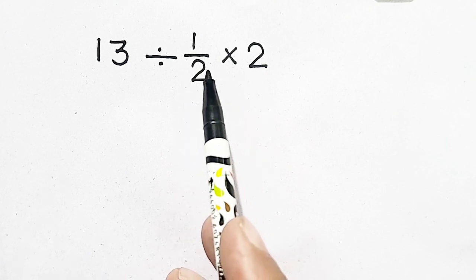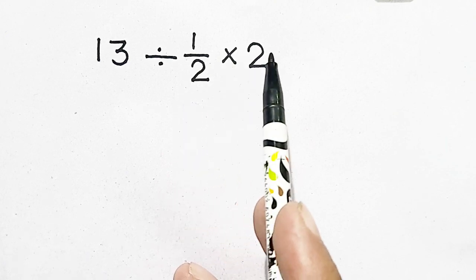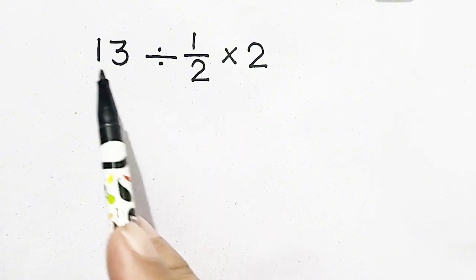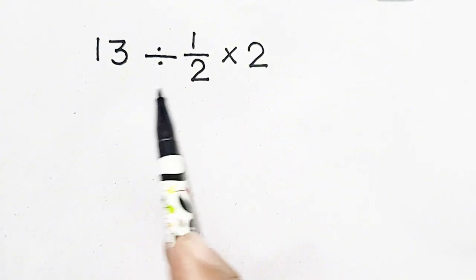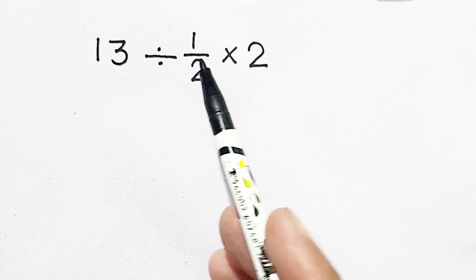Mostly people adopt the wrong approach where 1/2 and 2 are cancelled. So 13 divided by 1 equals 13 would be their answer, but it is wrong.